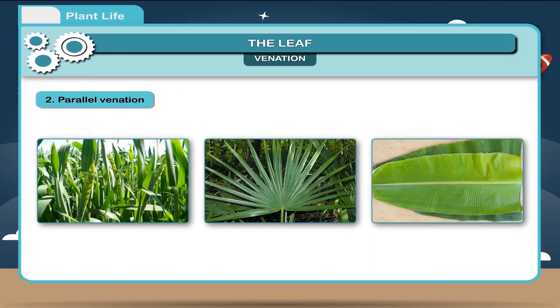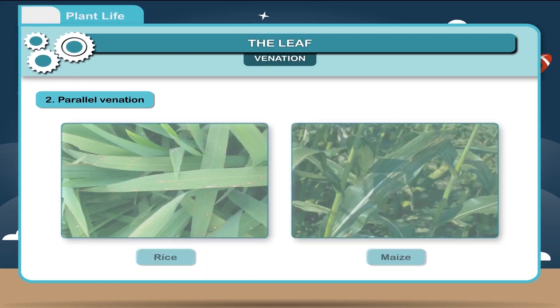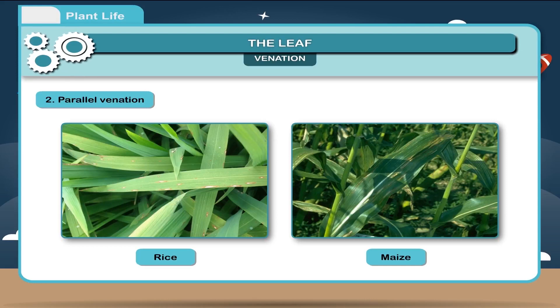Second, parallel venation. When veins run parallel to each other from base to apex in the leaf blade, it is called parallel venation. Leaves of wheat, palm, banana, rice, and maize have parallel venation.